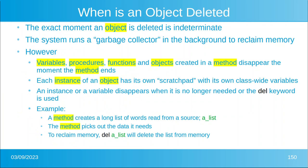When is an object deleted — when does its lifetime end? The exact moment that an object is deleted is not determined; there's no indicator, it happens in the background. The garbage collector reclaims memory as it sees fit. However, variables, procedures, and other things created in a method disappear — the scratch pad disappears the moment the method ends. Each instance of an object has its own scratch pad with its own instance variables. If you had 20 horse-hand objects, each instance would have its own scratch pad.